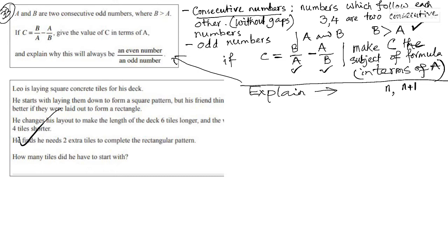The right hand side of the equation C equals B over A minus A over B should be in terms of A. And then finally, there is a second part of the question where you got to explain whether the top expression is always going to give you an even number and the bottom expression is always going to give you the odd number. But I figured out that this should be the inverse of what the question said. We'll talk about that later on.